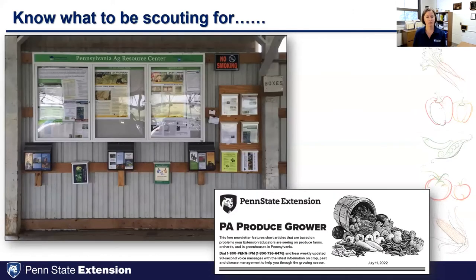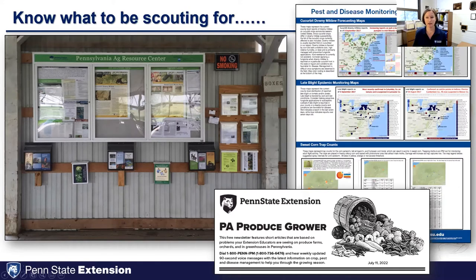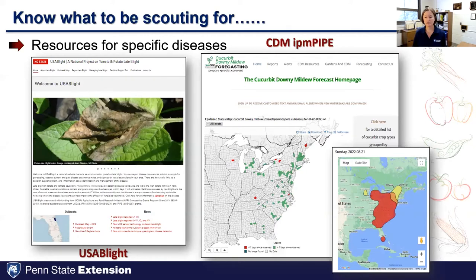We also work with a lot of plain-sect growers, and at many produce auctions we have educational kiosks where we post information weekly, plus a newsletter flyer called PA Produce Grower summarizing issues we're seeing in the state. We also have pest and disease monitoring and forecasting information — knowing and paying attention to disease alerts and insect pest alerts will help guide your scouting.